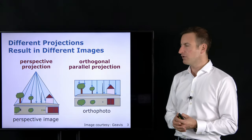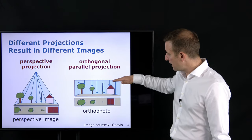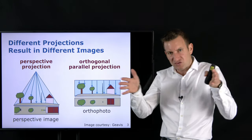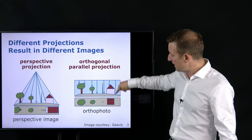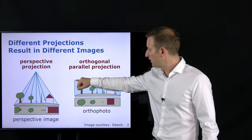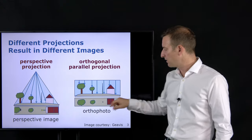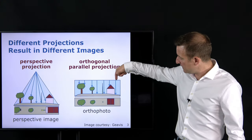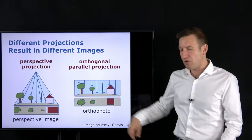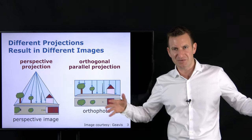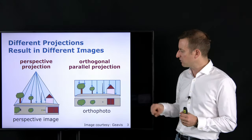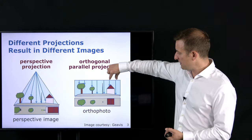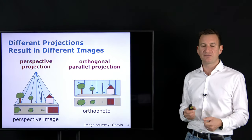What we would like to have is the so-called orthogonal parallel projection. In this case, the image plane is as large as the world we are looking into, and all rays from the pixel onto the world should be parallel, with a right angle as they leave the image plane. An image like this from the top — the so-called orthophoto — means that a distance in an image and a distance on the ground are identical, up to a scale factor.